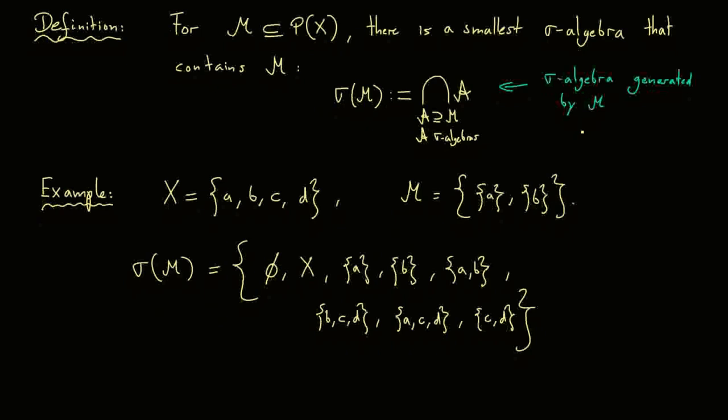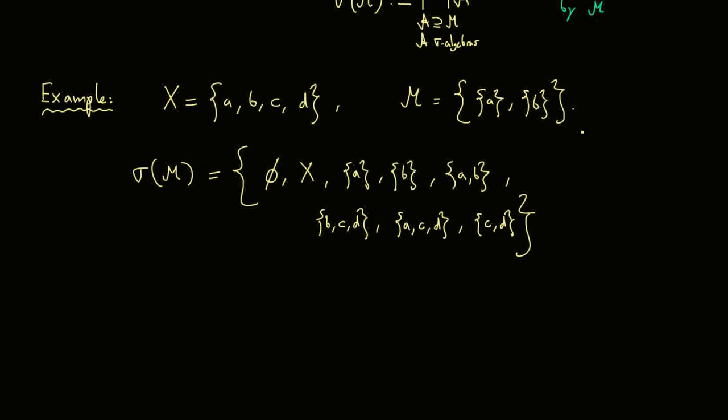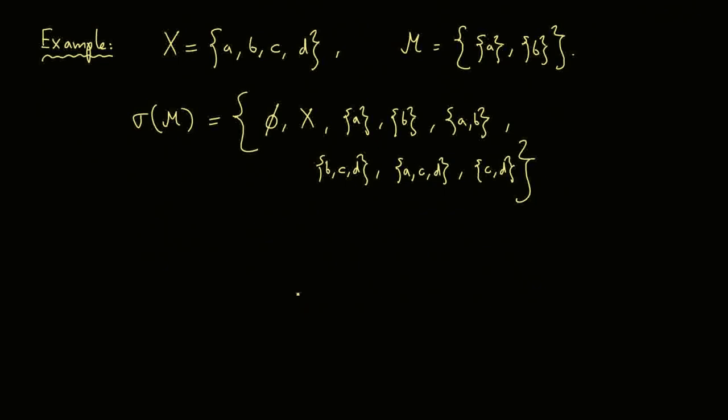What you saw here is that it's not so hard to get to the sigma algebra if we start with a finite set — if you have finitely many elements, we can do all the finitely many operations to end at our sigma algebra. Obviously, this has to be much harder if we start with an infinite set, because then we have to do infinitely many steps until we reach the sigma algebra. And this leads us now to the most important sigma algebra.